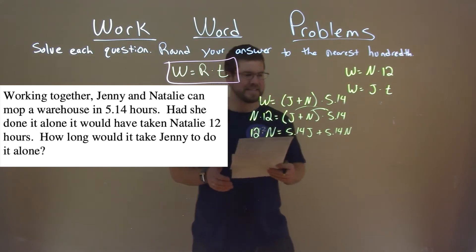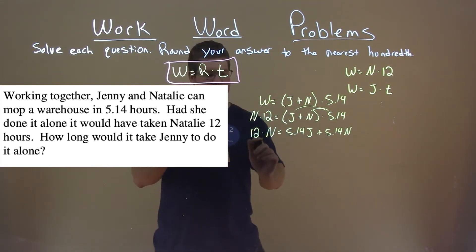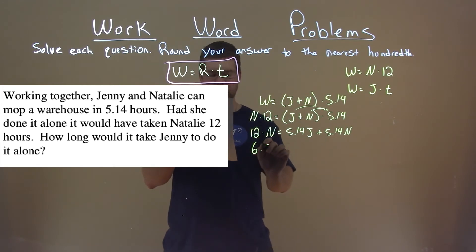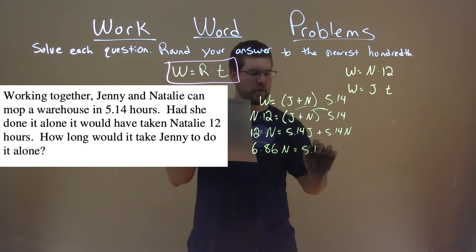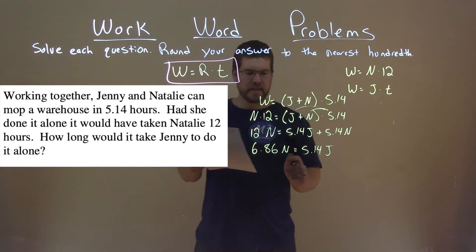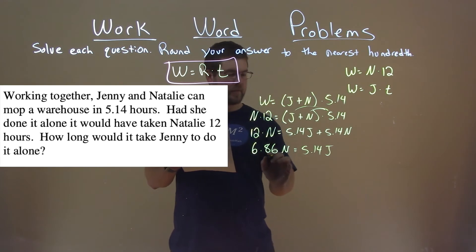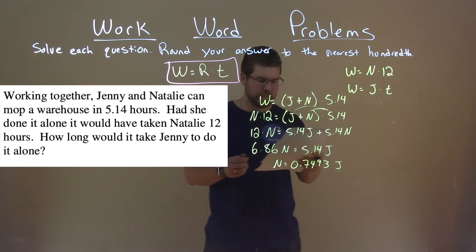Now, let's try to get our N's together. We subtract 5.14 from both sides, and we're left with 6.86N equal to 5.14J. From there, let's get N by itself, divide both sides by 8.16, and we're left with N by itself here, is equal to 0.7493J.